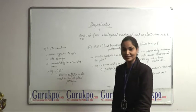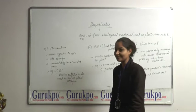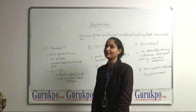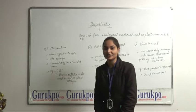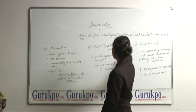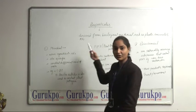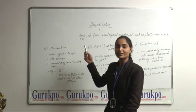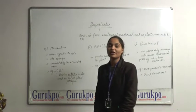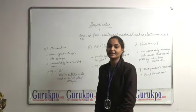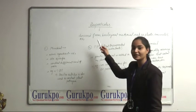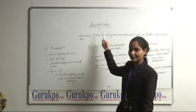What are biopesticides? Biopesticides are certain types of pesticides derived from biological material such as plants, animals, and microorganisms. For example, canola oil has pesticidal applications, and that is why canola oil is a biopesticide.